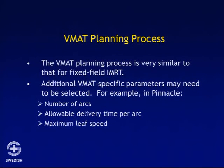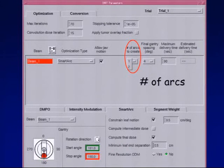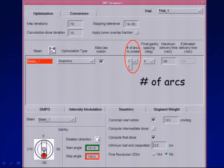The VMAT planning process is very similar to that for fixed-field IMRT. There are some additional VMAT-specific parameters that may need to be selected. Running through examples in Pinnacle's SmartArc: you have to select the number of arcs, the allowable delivery time per arc, and the maximum leaf speed. Carl Otto's paper advocated single-arc delivery, but there are cases where you may find an advantage to adding a second arc.